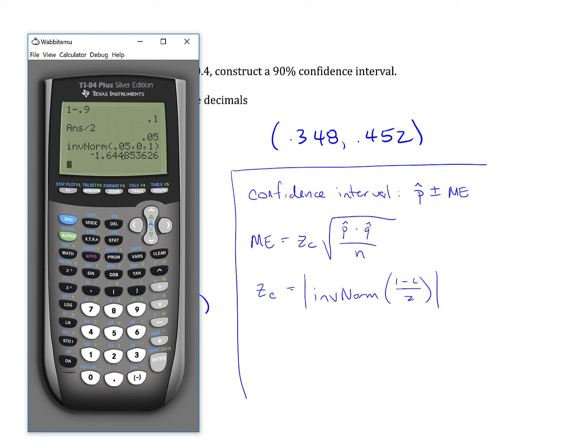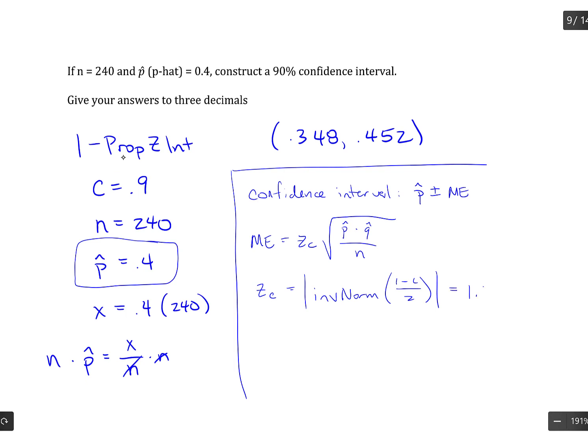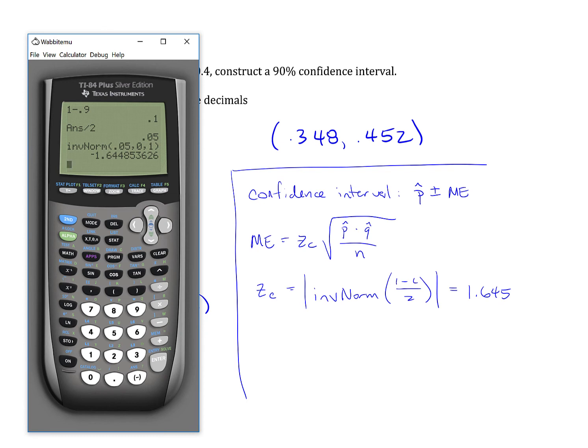So negative 1.645. But since we need to take the absolute value, we'll make it positive. Okay, now we take that value, z sub c, so 1.645.